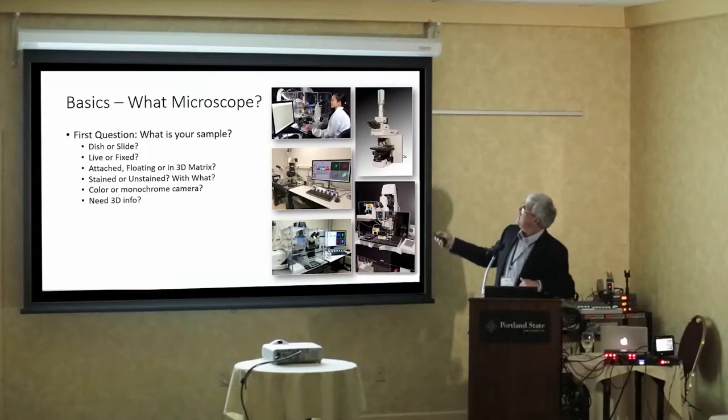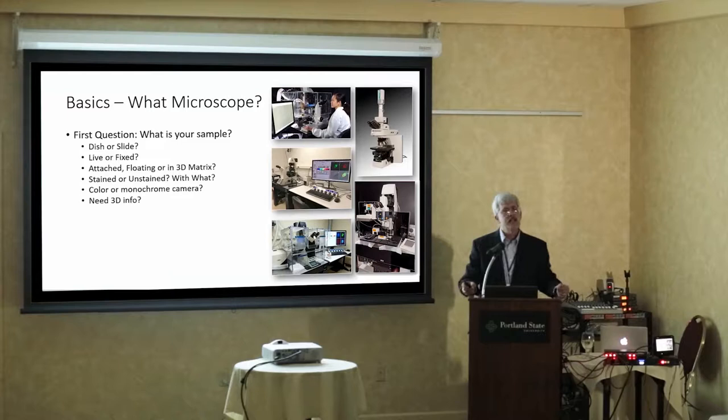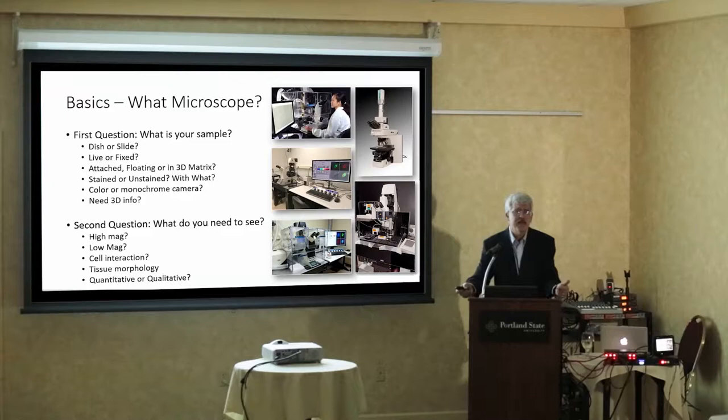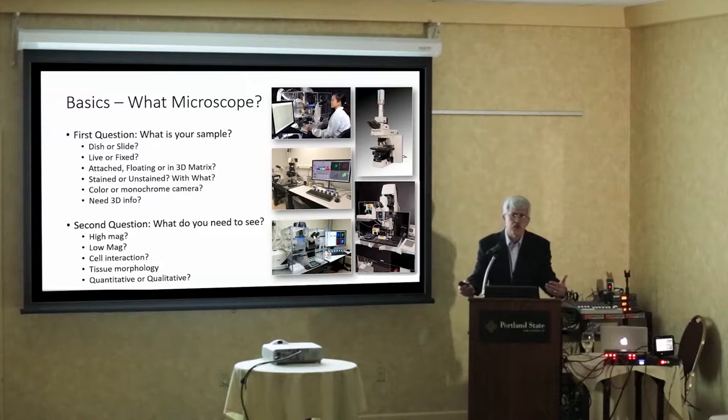Once you get an idea of that, you can decide: I'm going to use the wide-field inverted scope, or the upright, or the two-photon, or one of my two confocals. Depending on what you need to see — high mag or low mag, cell interaction versus general morphology, quantitative versus qualitative results — that's all going to dictate which way we go. If something is just moving around, interesting; but if you're trying to quantify that information and give numbers to it, that's a whole other ball of wax.